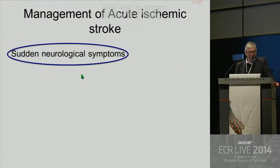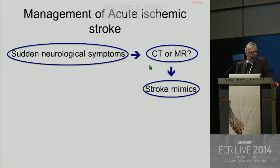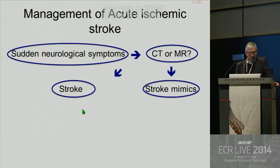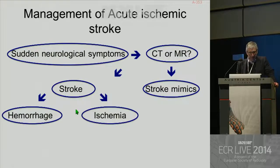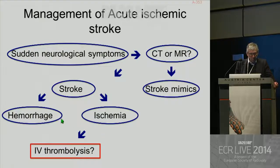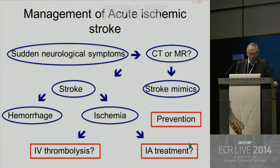You have certain neurological symptoms. You will do CT or MR, and you have to eliminate the stroke mimics. You will have the diagnosis of stroke, differentiate between hemorrhage or ischemic lesion, and make a choice for the treatment: should the patient be treated with IV thrombolysis? Is there an indication for IA treatment, endovascular treatment? And finally, we will discuss prevention rapidly.